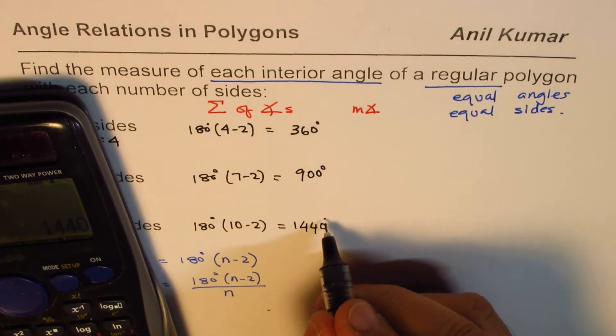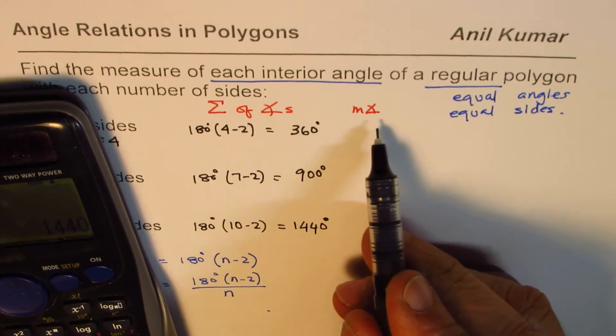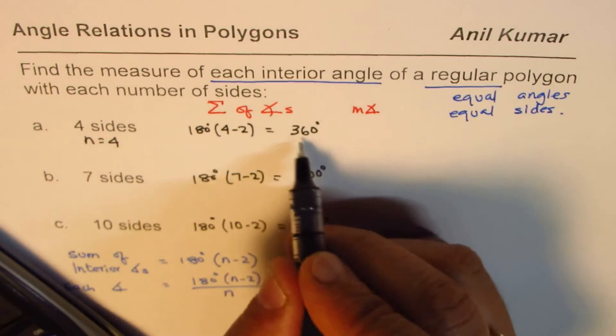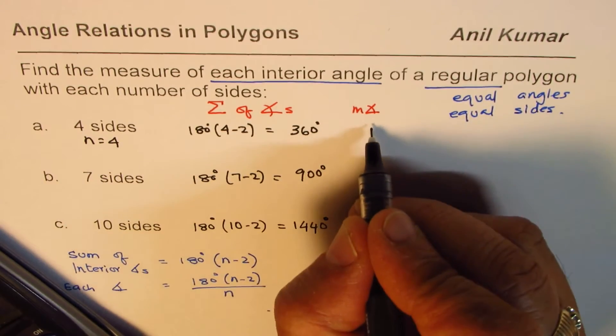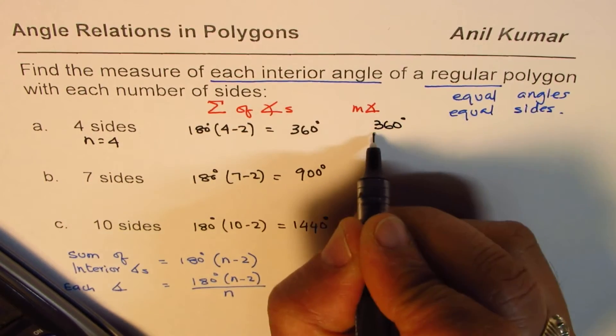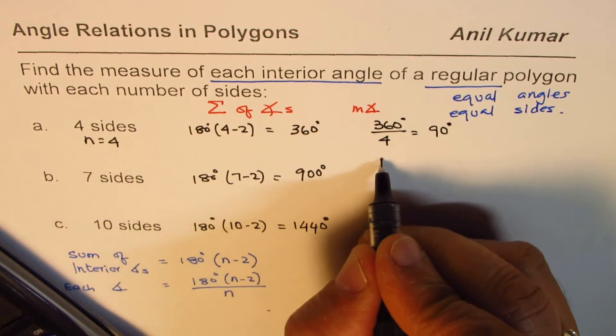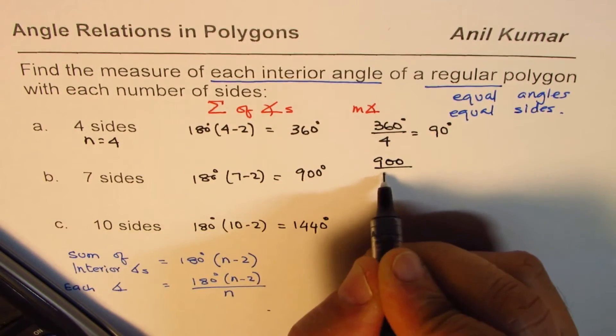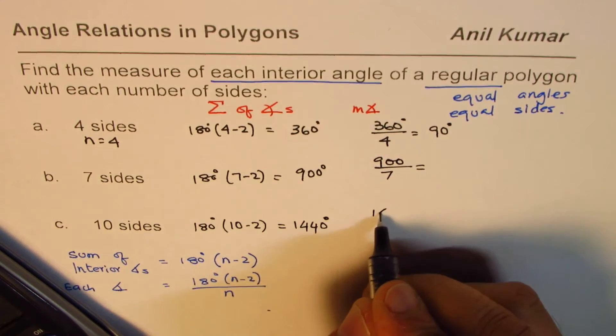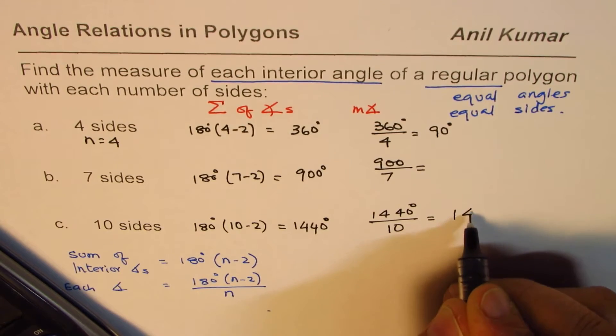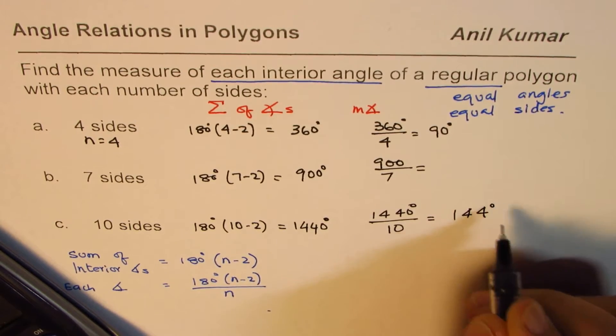So, that is sum of all these angles. You need to know the measure of angles. So, the measure will be sum divided by number of sides. This will be 360 degrees divided by 4, which is 90 degrees. Then, you have 900 degrees divided by 7, and then you have 1440 degrees divided by 10, which is 144 degrees.